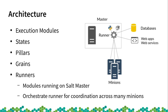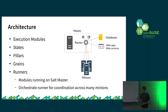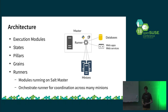All the states, runners, and everything — even though they are described on the Salt master — are executed on the minion. When the minion is registered, it synchronizes and fetches all the state files and Python modules it needs into the local cache of the Salt minion. When instructed, it executes them on the minion, so there is no way to change data on the Salt master itself. If you want to run something on the Salt master, there is a module called runners. Runners are similar to execution modules but they run on the server — this is how you can, for example, change pillars.